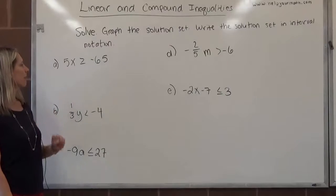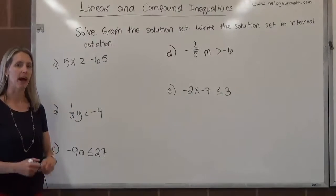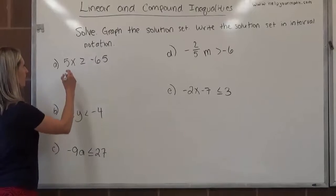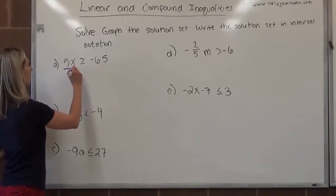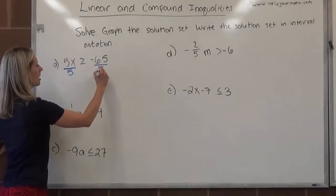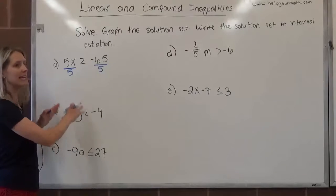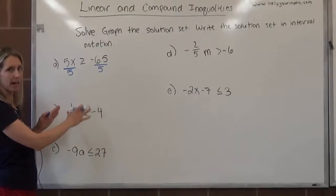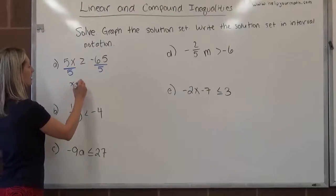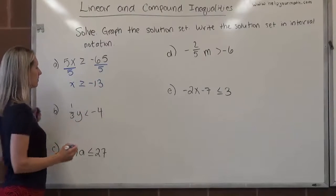First, we have 5x is greater than or equal to negative 65. To get x by itself, we will divide both sides by 5. I divided both sides by a positive, so it maintains the symbol that is there. So we would write this as x is greater than or equal to negative 13.